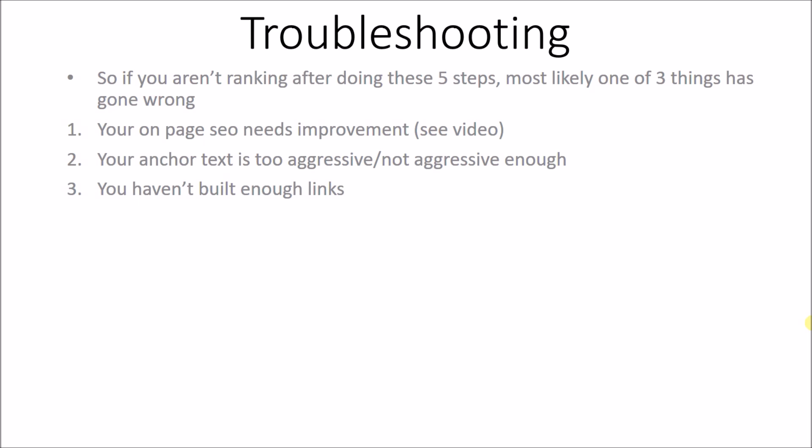Number three, and the most common problem, is that you just haven't built enough links. 90% of the time, if you're not ranking and you've done everything else correctly, you just need to keep sending PBNs to your site. That's a very simple overview of how to rank in Google. Just follow the five linked videos in the order presented in this video and you should have no issue ranking. Subscribe for more content.